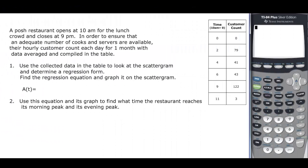The second problem: we have a posh restaurant that opens up at 10, closes at 9, and this is what the customer count is. We need our calculator because it says use the collected data to look at the scattergram and then determine the regression form and find it.